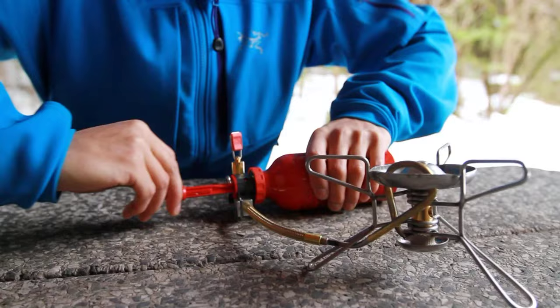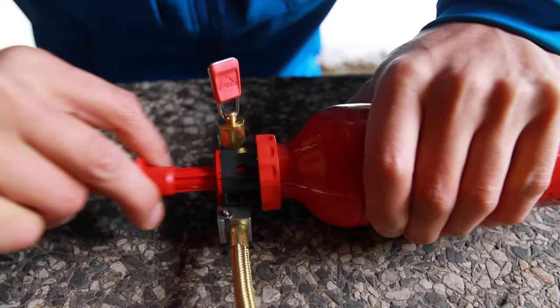To pressurize the bottle, pump 20 to 30 strokes or until the plunger offers firm resistance.